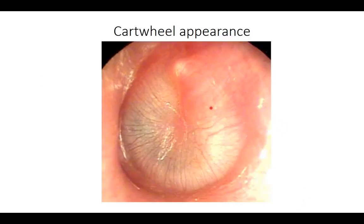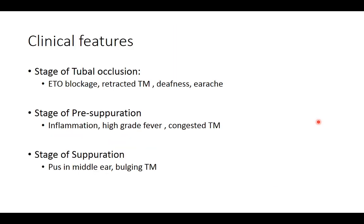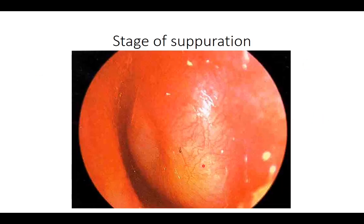This image shows an inflamed tympanic membrane with the handle of malleus and the umbo visible. You can see multiple leashes of blood vessels — this is called the cartwheel appearance, typically seen in the stages of suppuration and pre-suppuration. In the stage of suppuration, you can see frank yellow discoloration behind an intact tympanic membrane, representing pus collection, with the entire tympanic membrane being congested.